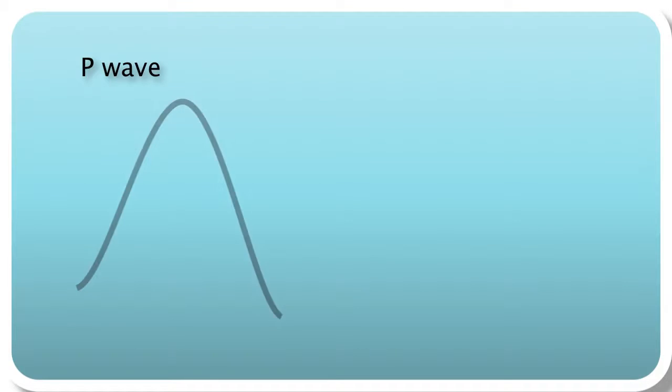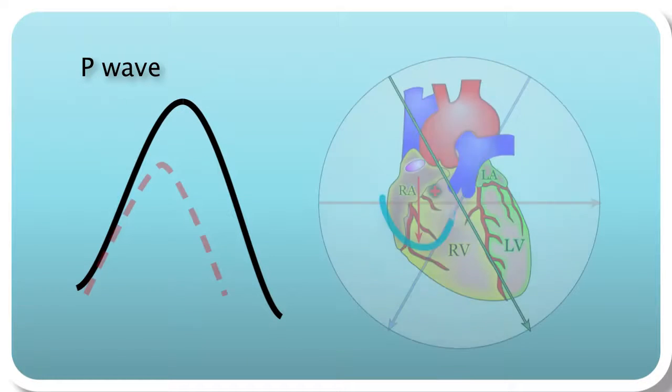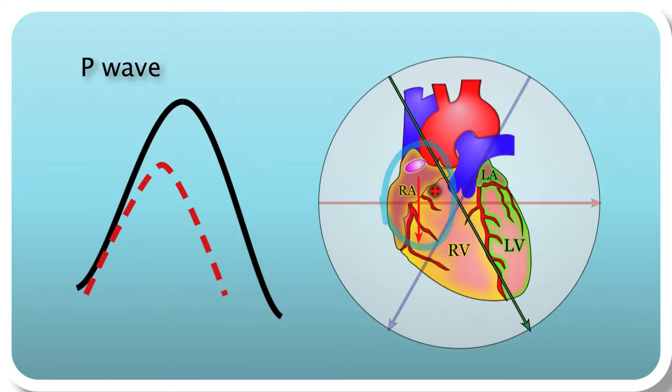In fact, if you look at the P wave more closely, it could theoretically be split up by both right atrial depolarization, which occurs first, and followed by left atrial depolarization.